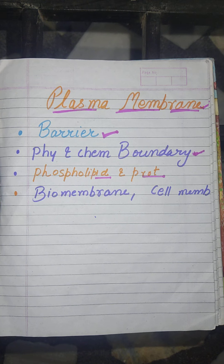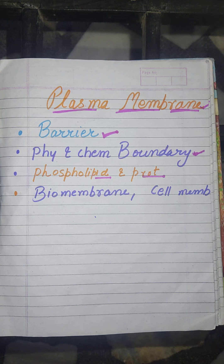The plasma membrane defines the physical and the chemical boundary of a cell. Plasma membrane and the organelles membrane are mainly composed of lipid bilayer. It is composed of a bilayer of phospholipids in which the lipids and the proteins are embedded. It is also known as biomembrane or cell membrane. The major portion of the plasma membrane is lipid, and in minor amounts, protein and carbohydrates are also present.